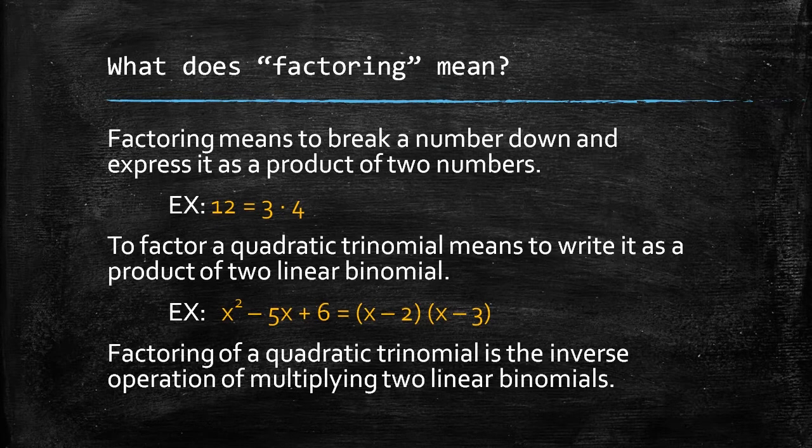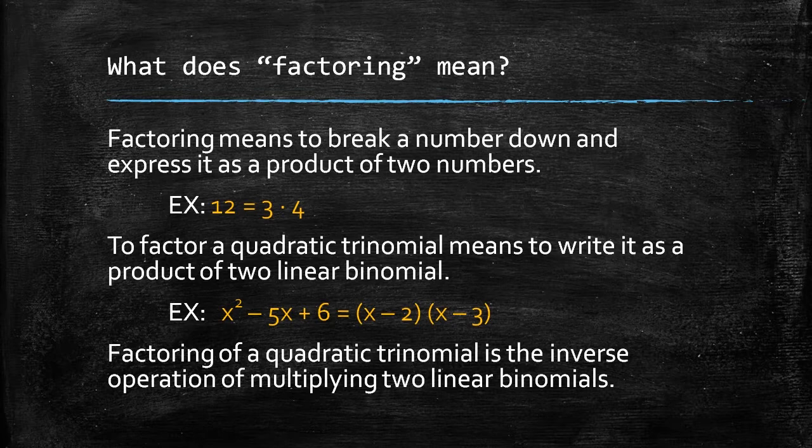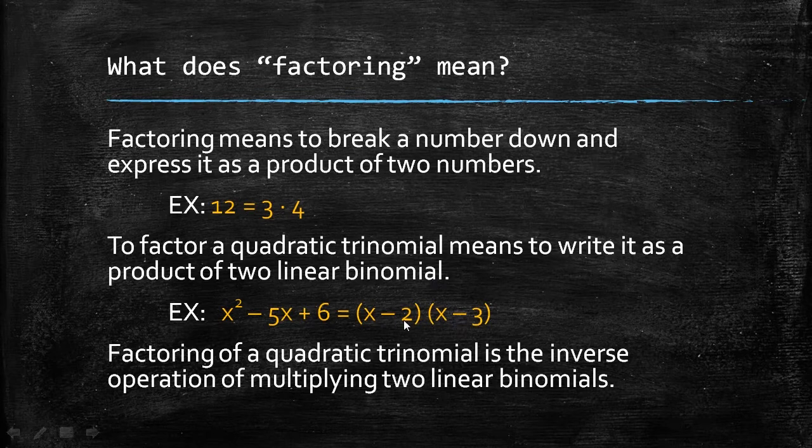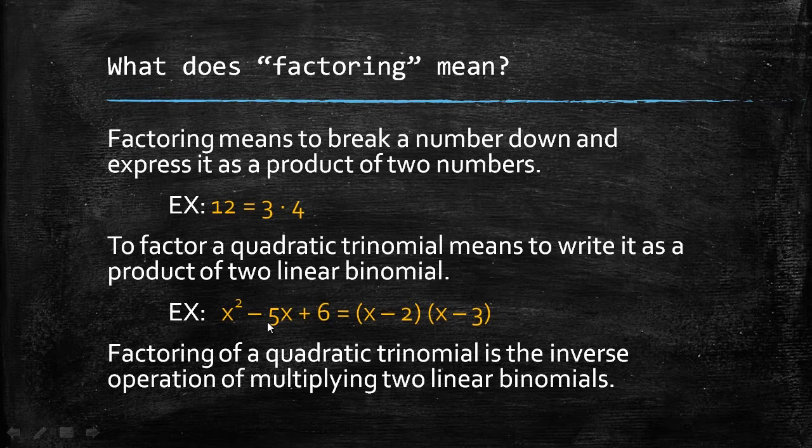Factoring of a quadratic trinomial is the inverse operation of multiplying two linear binomials, sometimes called UNFOIL. What this means is, if I were to multiply these two linear binomials, I would end up with this quadratic trinomial x squared minus 5x plus 6.